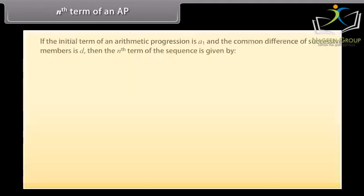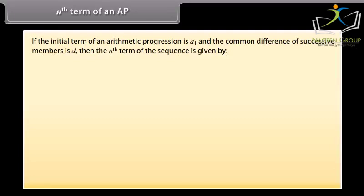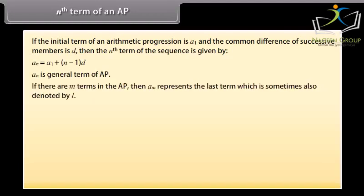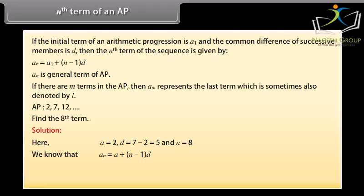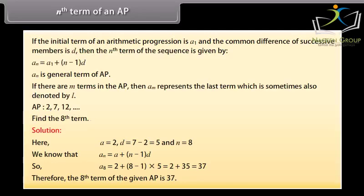Nth term of an AP. If the initial term of an arithmetic progression is A1 and the common difference of successive numbers is D, then the nth term of the sequence is given by AN = A1 + (N minus 1) into D. AN is also called the general term of the AP. If there are M terms in the AP, then AM represents the last term, sometimes denoted by L. Using the formula, let us find the 8th term of the given AP where A equals 2, D equals 5, and N equals 8. So A8 = 2 + (8 minus 1) into 5 = 2 + 35 = 37. Therefore, the 8th term of the given AP is 37.